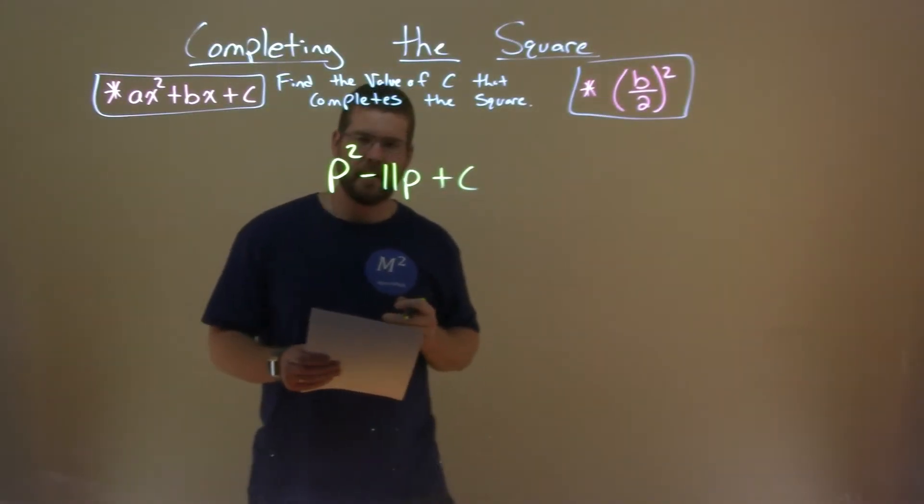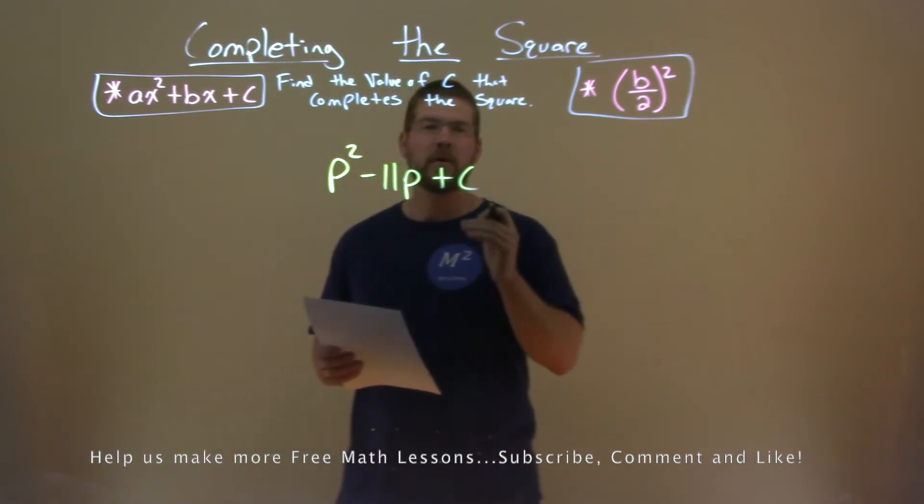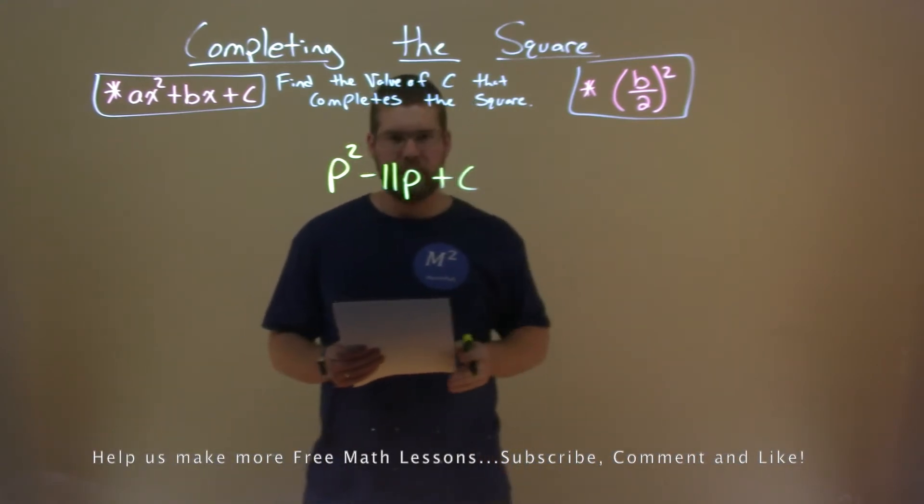We're given this problem right here, p squared minus 11p plus c, and we want to find the value of c that completes the square.